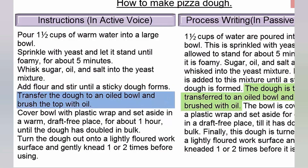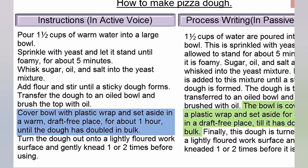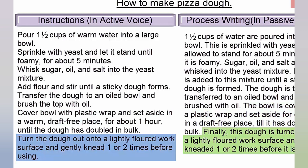The dough is then transferred to an oiled bowl and the top is brushed with oil. The bowl is covered with a plastic wrap and set aside for one hour in a draft-free place till it has doubled in bulk. Finally, the dough is turned out onto a lightly floured work surface and gently kneaded one or two times before it is used.